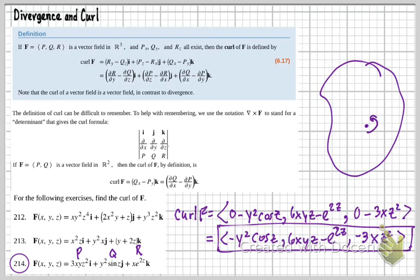This is going to be the component that bridges the gap between Green's circulation form and Stokes' theorem. That's the beauty of this, and that's where this component is going to come in handy for us later. But for now, this is the curl.